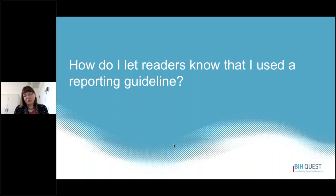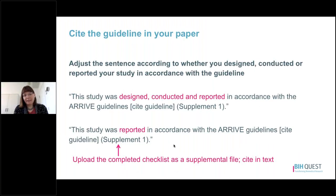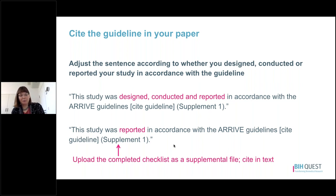How do you let readers know that you used a reporting guideline? You want to cite the guideline in your paper and adjust the sentence according to whether you designed, conducted, or reported your study in accordance with the guidelines. For example: 'The study was designed, conducted, and reported in accordance with the ARRIVE guidelines,' with a citation to the guideline and a link to the supplement containing the checklist. Alternatively, if you're already writing up your study and weren't able to design and conduct in accordance with the guideline, you might say: 'The study was reported in accordance with the ARRIVE guidelines,' with the citation and a link to the completed checklist in the supplement.